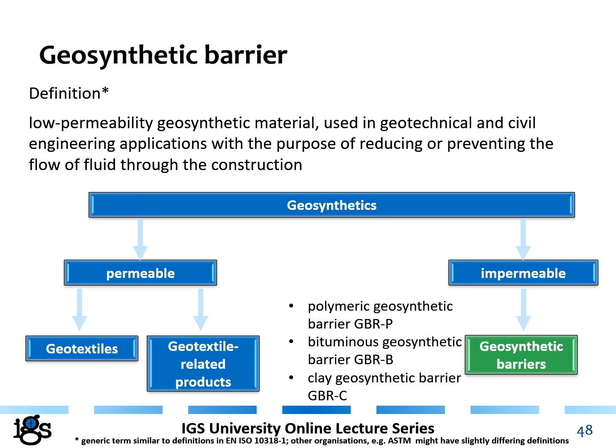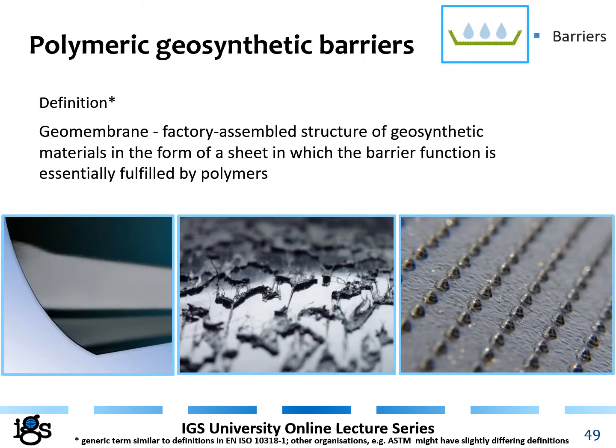After describing permeable geosynthetic materials — geotextiles and geotextile-related products — we now describe the impermeable products: geosynthetic barriers. These can be polymeric geosynthetic barriers, bituminous barriers, or clay geosynthetic barriers. All have the purpose of reducing or preventing the flow of fluid through the construction. The first is the polymeric geosynthetic barrier, basically known as a geomembrane — a factory-assembled structure in the form of a sheet where the barrier function is fulfilled essentially by the polymers.